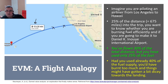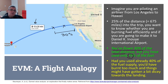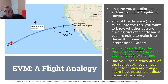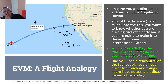Now suppose you are the pilot and you've flown 30 percent of the distance. You check your fuel consumption and you've used only 25 percent of your fuel. Do you feel comfortable? Yes — because you used 25 percent of fuel for 30 percent of the distance, meaning you have enough fuel to complete the flight. But suppose instead you've covered 30 percent of the distance and burned 40 percent of the fuel — that means you might run out of fuel in the middle of the ocean, so you have to do something.